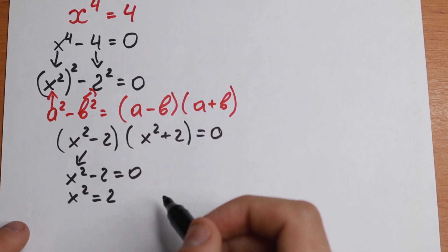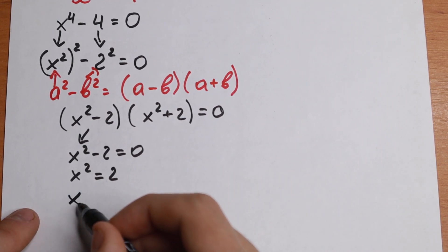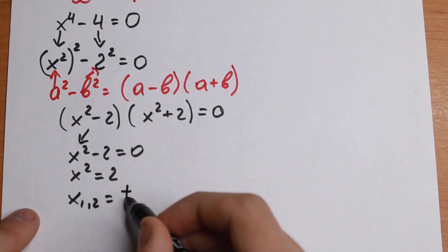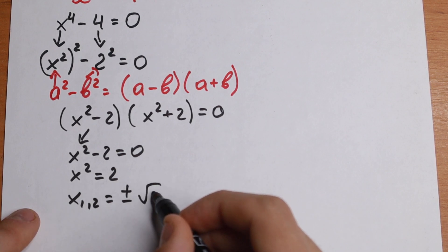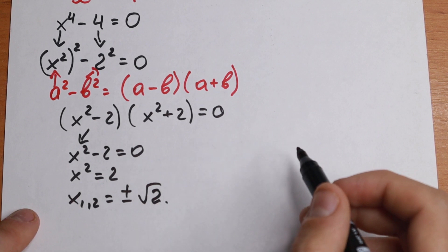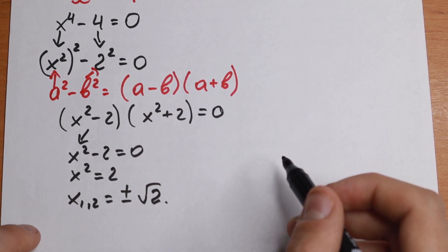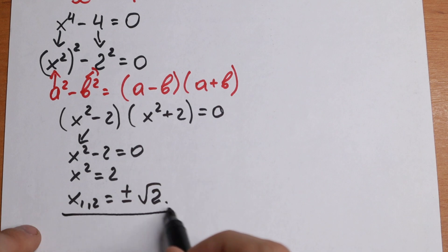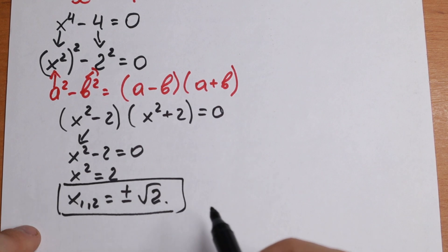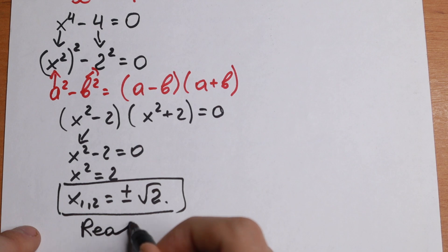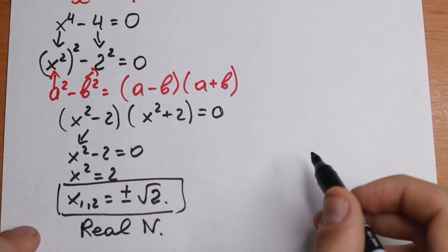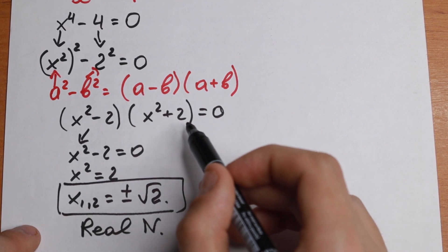And our obvious roots are x1 and x2 equal to plus minus square root of 2. Right here we have two roots. This is roots in real numbers. So right here as you can see we have two real number roots.